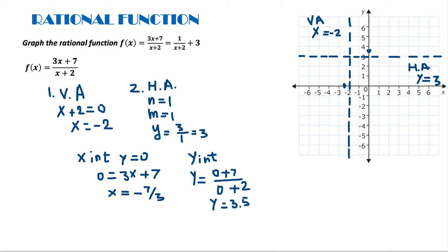Now I have to graph the function. I know the function passes through those intercepts. Because of the intercepts, it's going to pass through in this form, and it will get very, very close to the asymptotes — because every time the end behavior and the asymptotes get very close to each other. The same thing happens on the top: the graph goes very close to the asymptote. And on the other side, the graph passes through the intercept and goes very close to the asymptote on both ends. So this is the graph of the function.